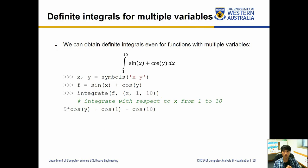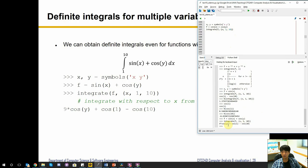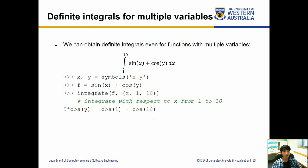We can obtain definite integrals even for functions with multiple variables. For example, with sin(x) + cos(y), we define that function and integrate f with respect to x from 1 to 10. Now we get an equation in terms of y, but we can't evaluate it numerically until we know the value of y, so we can't pass it into N(). We can still get the symbolic equation and plug in different y values to see the results. Now we have a basic knowledge of setting up SymPy and carrying out symbolic computation. The next part will be solving equations using these setups. See you in the next video!